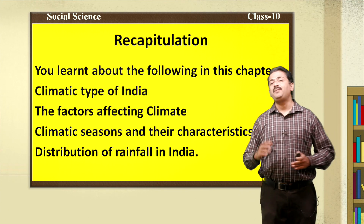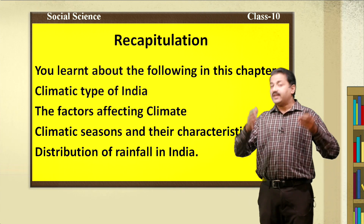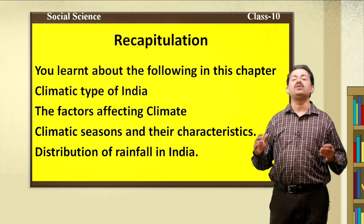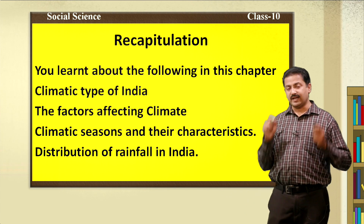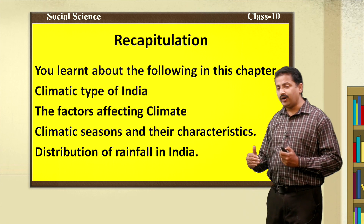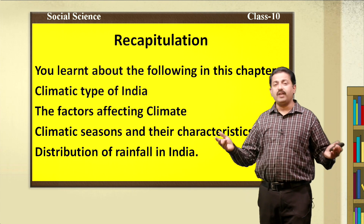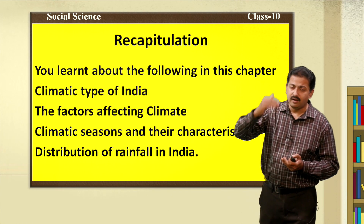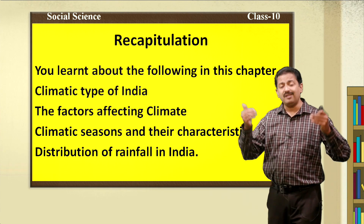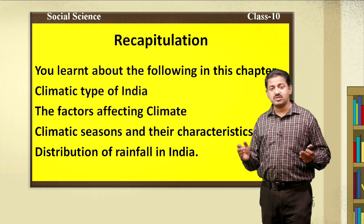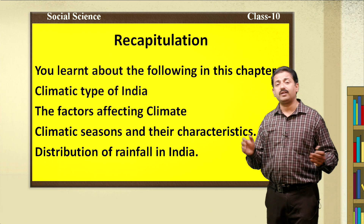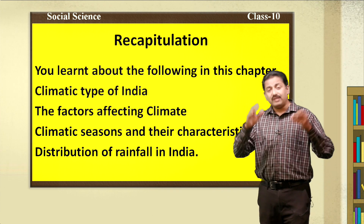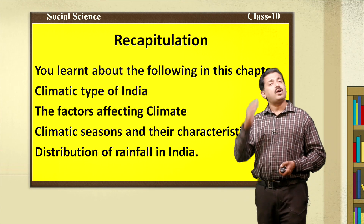Dear students, this is the time to recapitulate what we have learnt. In this lesson, you learnt about the climatic type of India — that Southwest monsoons influence Indian climate. You learnt the factors which affect the climate: water bodies, location, monsoon winds, and relief features. You learnt about the four climatic seasons — winter, summer, Southwest monsoon season, and retreating monsoon — the amount of rainfall each receives and the reasons for it. You also learnt about the distribution of rainfall in India with examples of places.